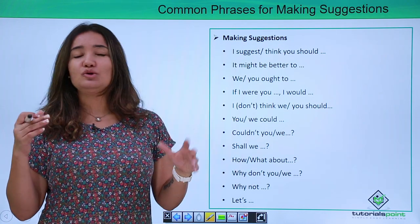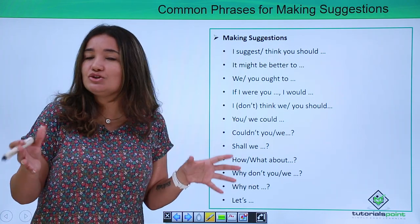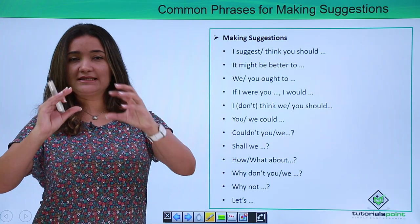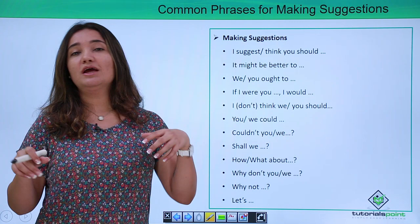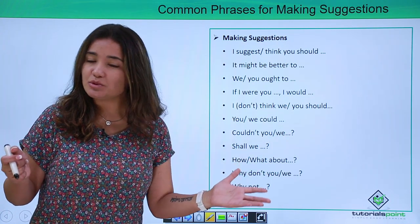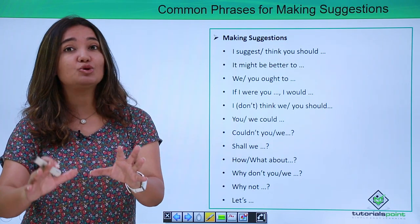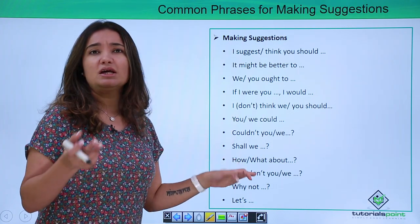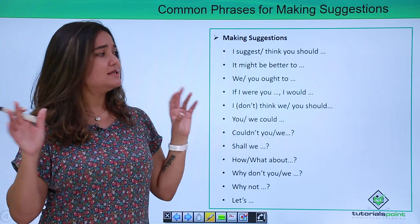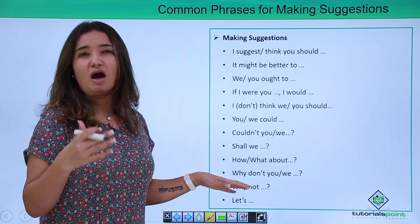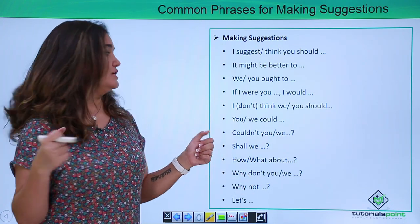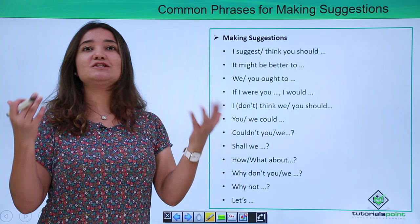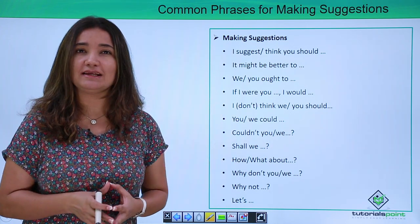'Couldn't you' or 'couldn't we?' For example: 'Couldn't we do it that way around?' This starts at a slightly doubtful note — not that you are unsure, but you are leaving room for possibility. 'Shall we?' is yet another easy, simple way of giving a suggestion — for example: 'Shall we go ahead and check that out?' Then 'How about' or 'What about?' — for example: 'What about that person? Do you think he is a good fit for this team?' And 'Why don't you' or 'why don't we just check that out?' — this is more inquisitive, questioning in tone.